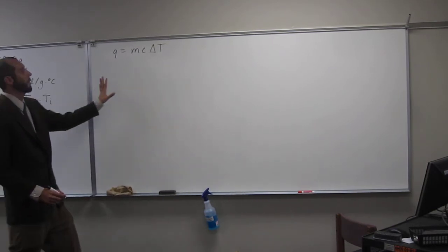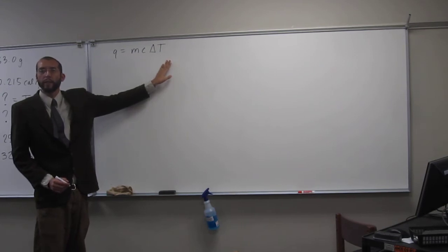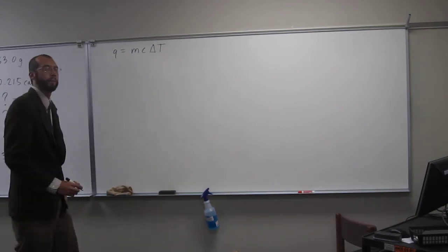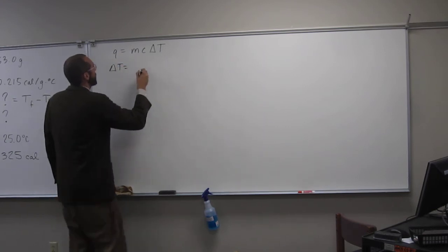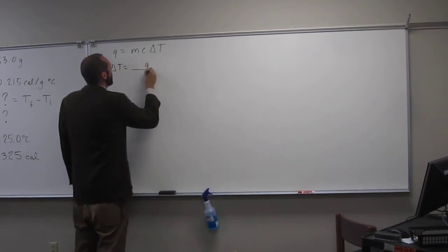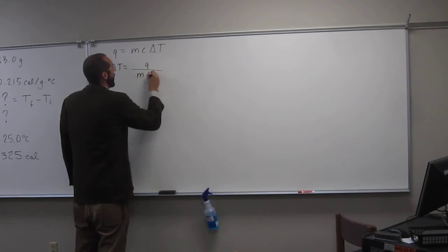So first thing we want to do, of course, is isolate the delta T variable. Is everybody okay with that? So, delta T equals Q divided by MC.